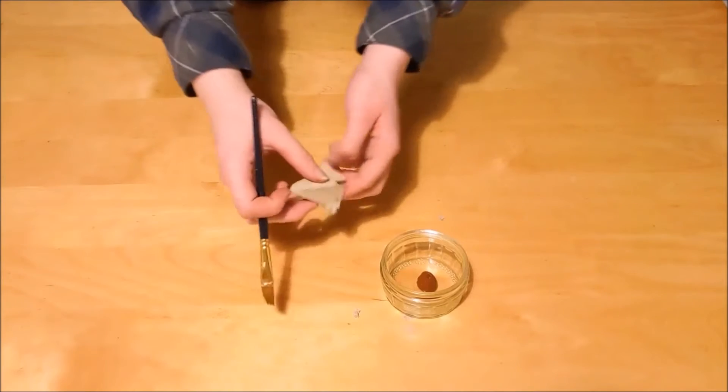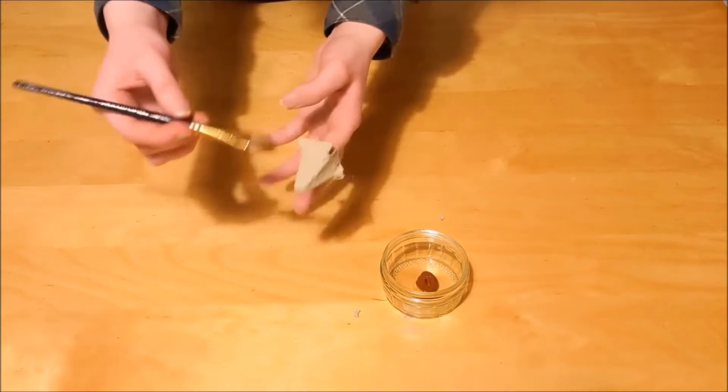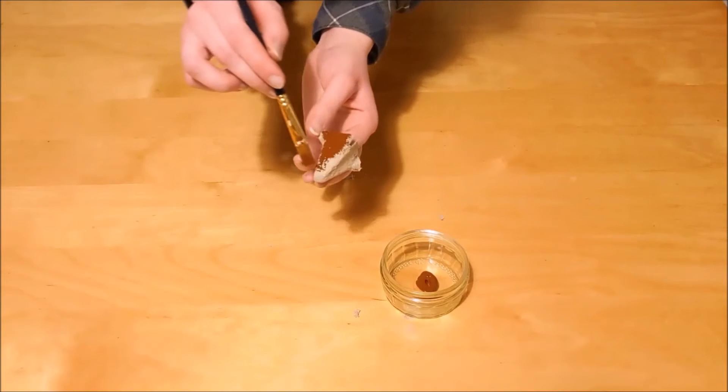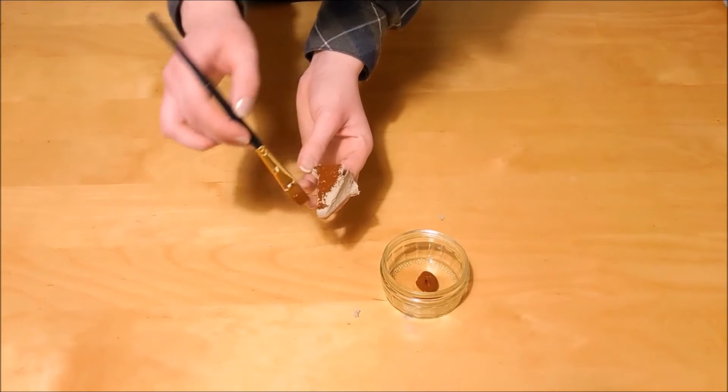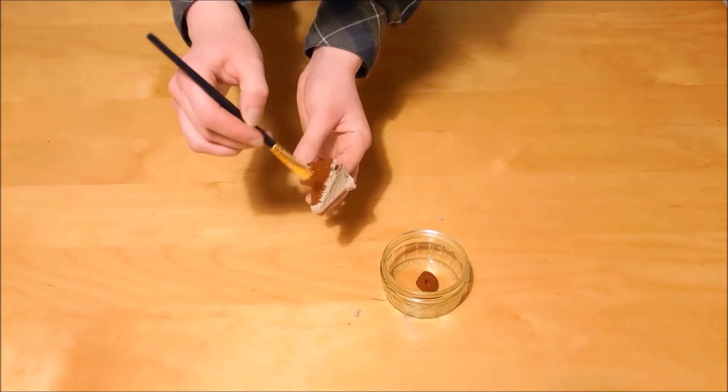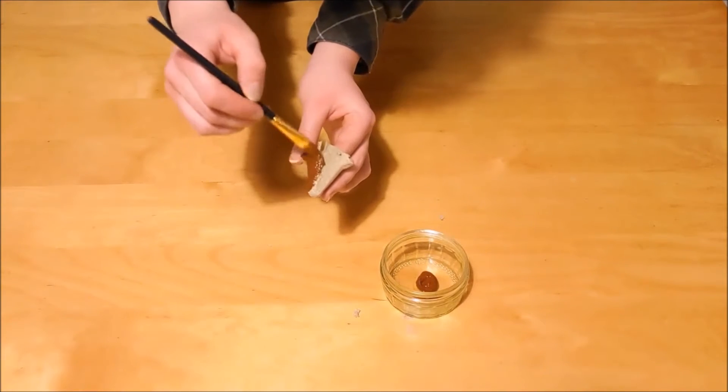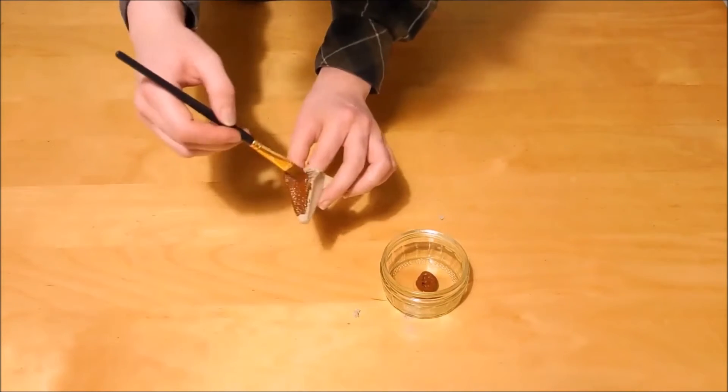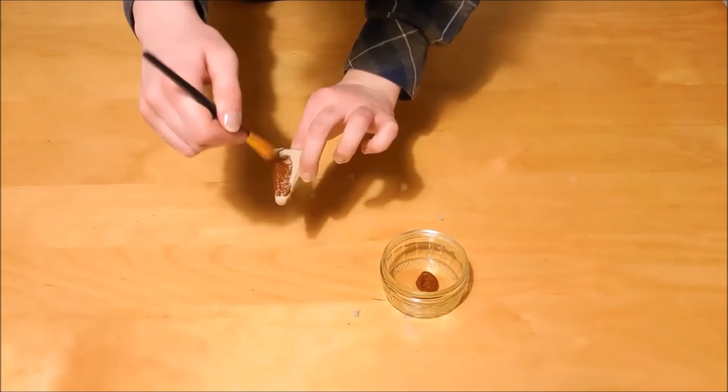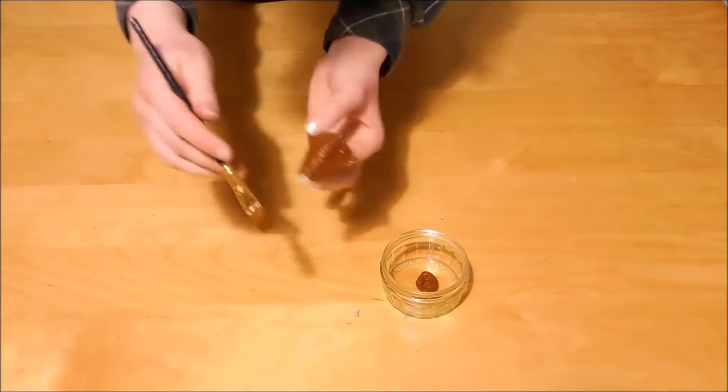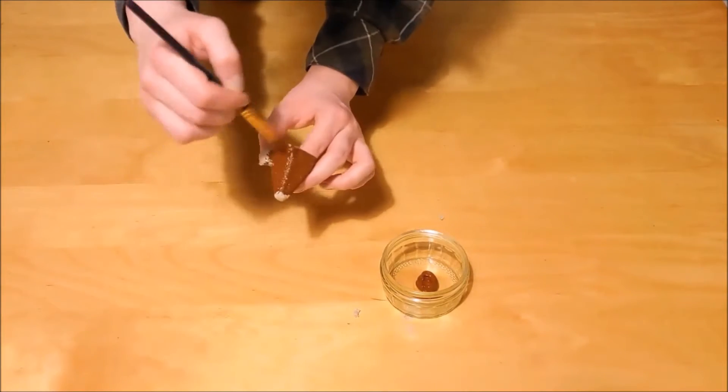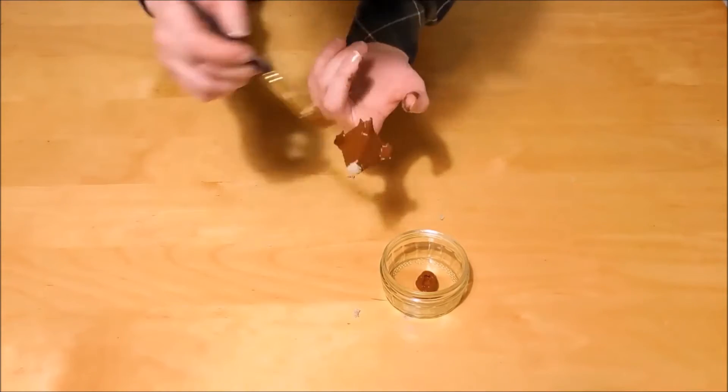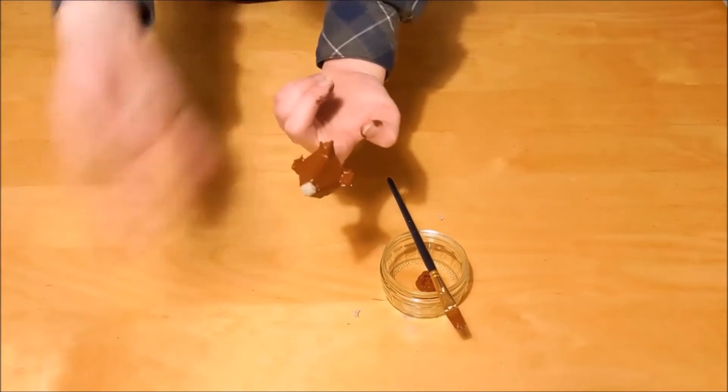The next step is to color in or paint your mouse head. Just apply it on like this and try and leave a little section here, because this section is going to be where the nose is. We're going to color that in pink or paint it. Once that's all painted, set it aside to dry.